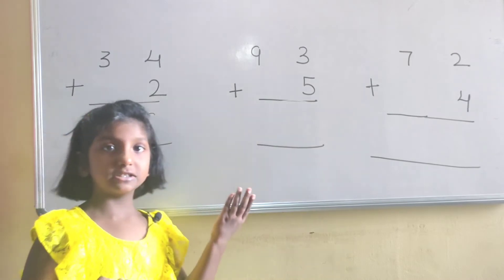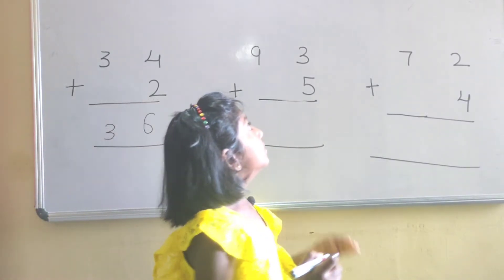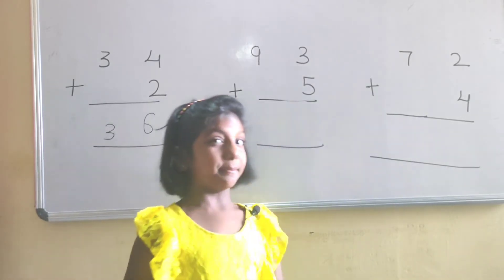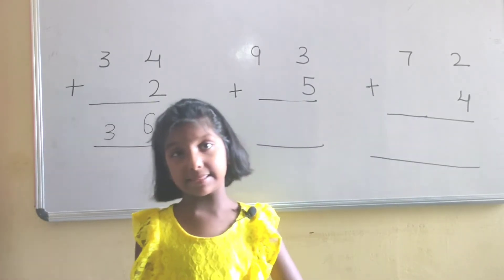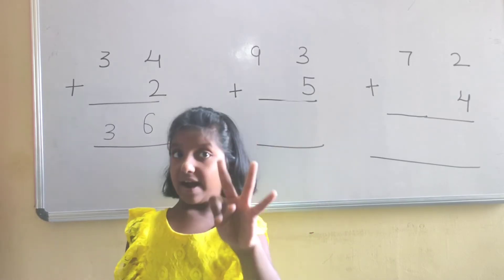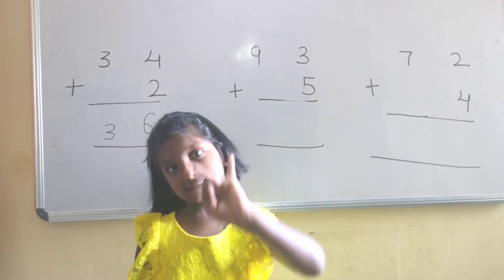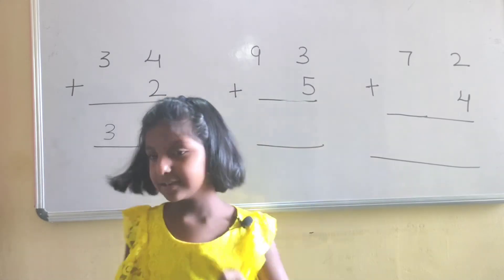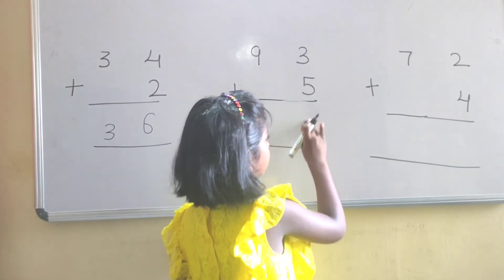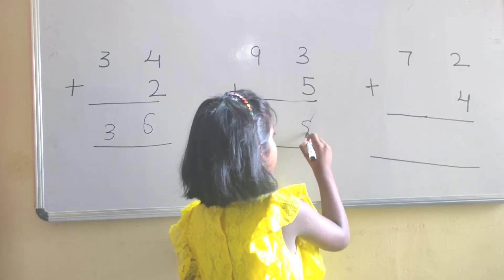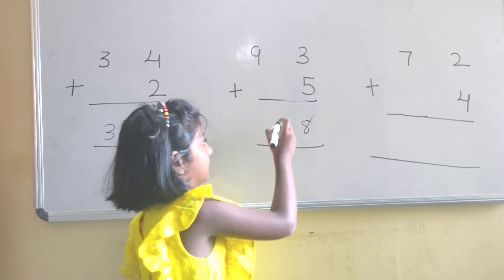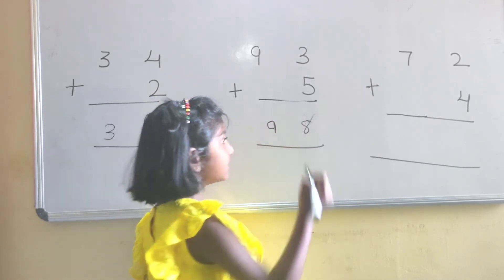Let's see the next problem: 9, 3, 5. 3 in mind, 5 in hand. 3, after 4, 5, 6, 7, 8. The answer is 8. Here there is no number to add. That's why I am writing 9.